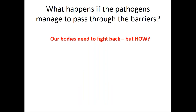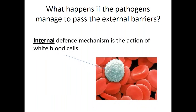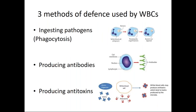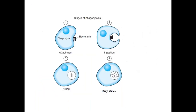What happens if pathogens manage to pass through the barriers? In this case, we have a different defense: white blood cells. The internal defense mechanism is the action of white blood cells, which are part of the blood and protect our body. There are three methods of defense used by white blood cells. In the case of phagocytosis, one type of white blood cell is called a phagocyte. These are responsible for killing bacteria by surrounding and engulfing them. Phagocytes detect bacteria, surround and engulf them, and then release enzymes which break down the bacterial cell and cell membrane.